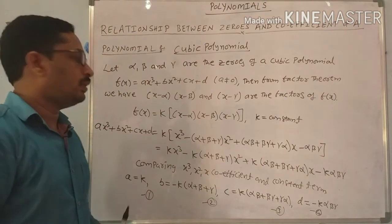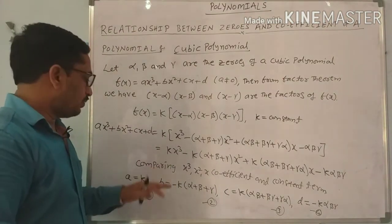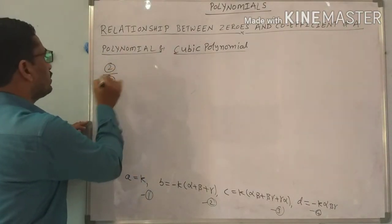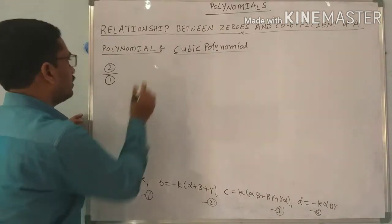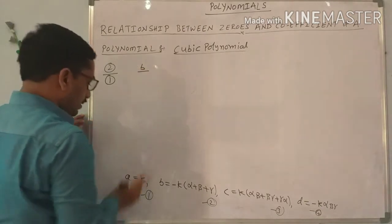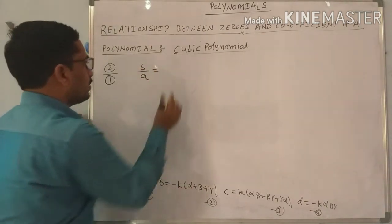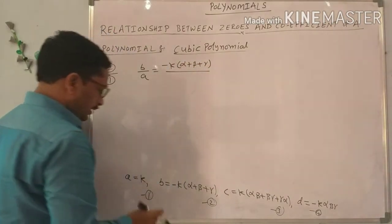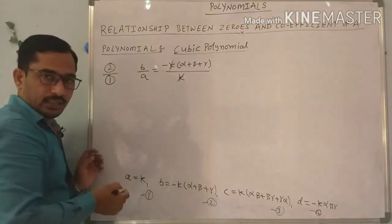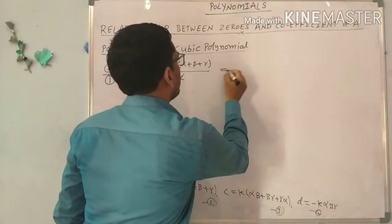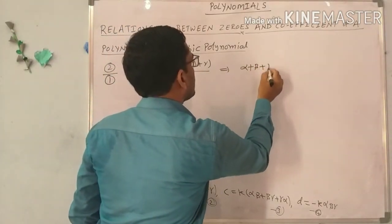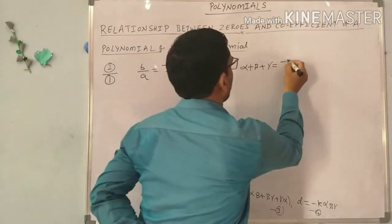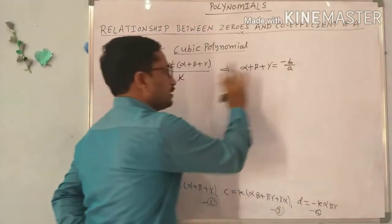Now, to form the relation among these coefficients with the zeros, divide equation 2 by equation 1: B by A equals minus K into alpha plus beta plus gamma divided by K. K cancels. Transposing the minus gives alpha plus beta plus gamma equals minus B by A. This is the first relation.